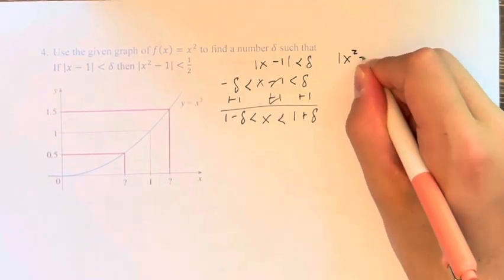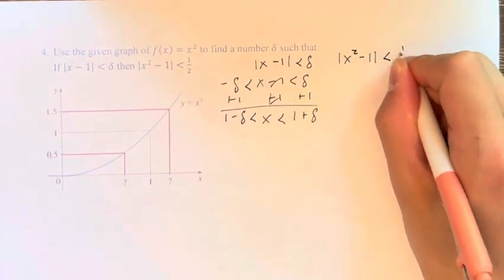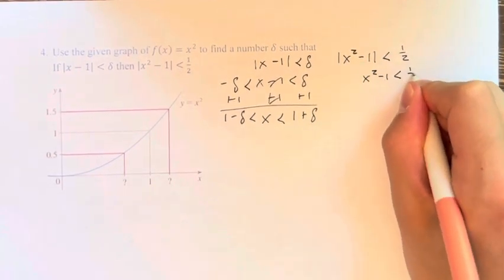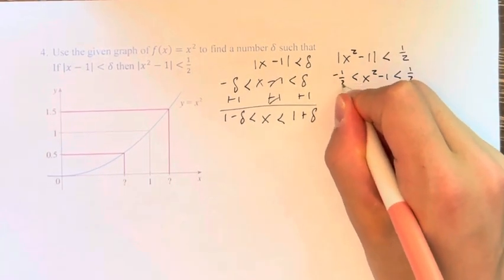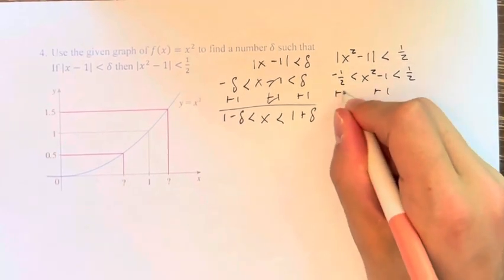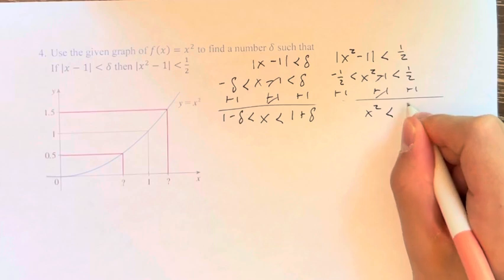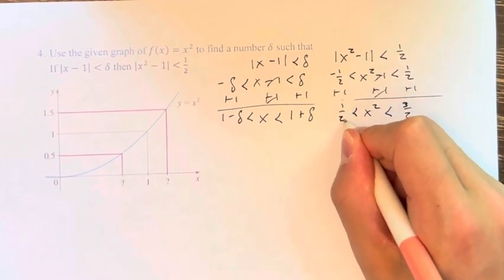Similar thing here, we have the absolute value of x squared minus 1 is less than 1 half. Therefore, x squared minus 1 is less than 1 half and greater than negative 1 half. Adding 1, we get x squared is less than 3 over 2 and greater than 1 over 2.